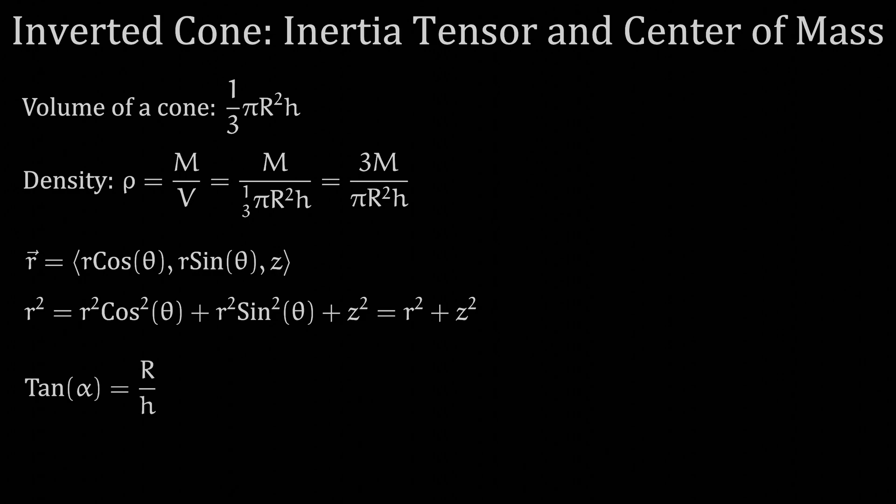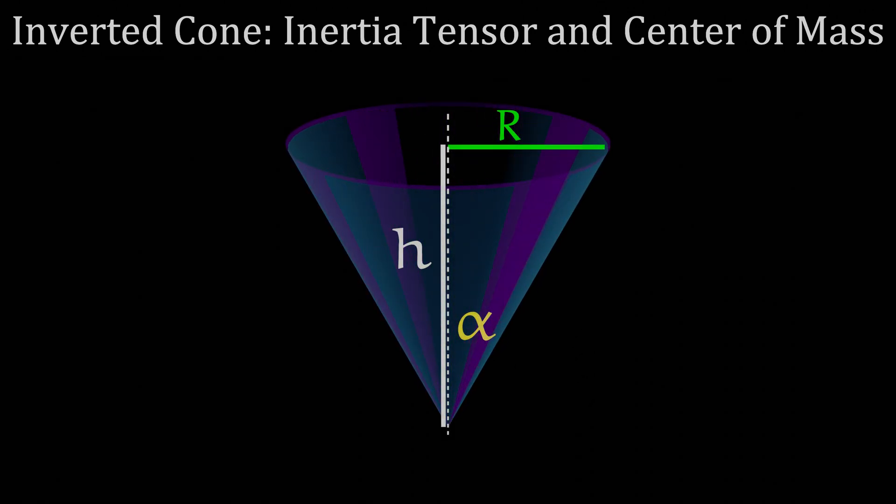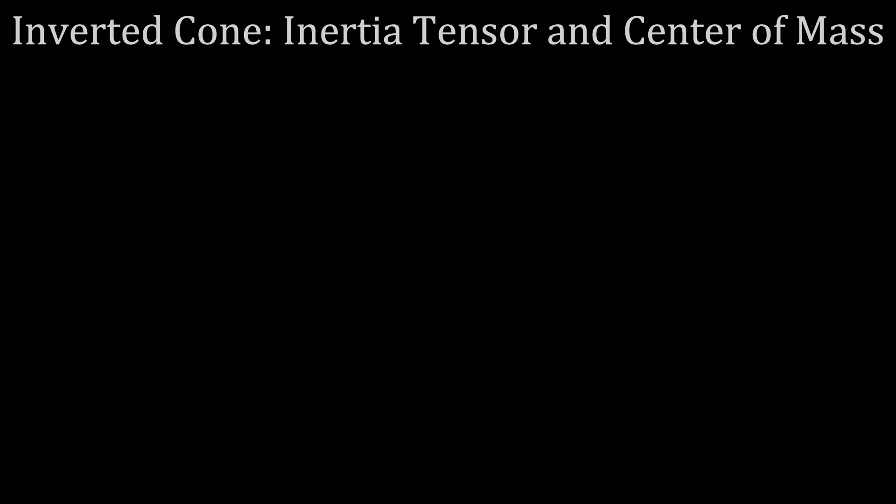Now, on to the math. We'll start by finding the center of mass. Since the cone is symmetric in the x and y directions, so is its mass distribution, making the center of mass in the x and y coordinates simply at the origin. The only center of mass coordinate we need to calculate, then, is the z component.